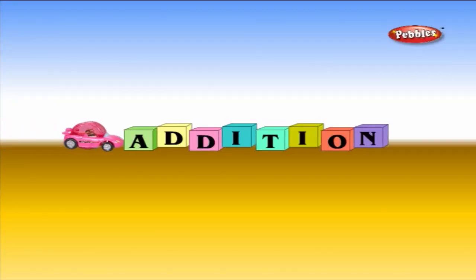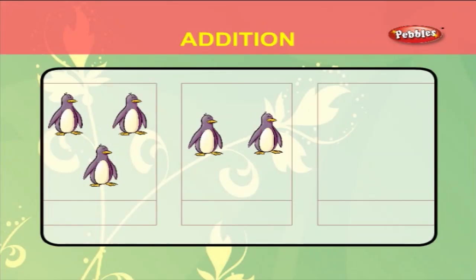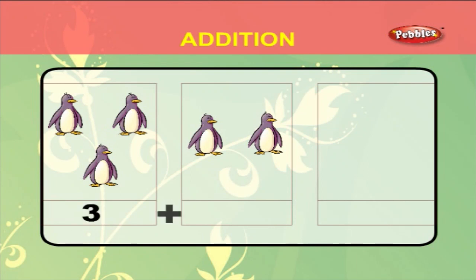Addition. Let us first learn simple addition. The first box contains 1, 2, 3 penguins and the second box contains 1, 2 penguins. Now add the penguins in the first box and the second box. We write this as 3 plus 2 is equal to 5.